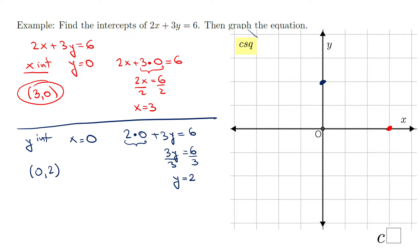The y-intercept is (0, 2), which is right here. Now we have these two points and we can sketch the graph. You don't need more than two points — these two intercepts are good enough to sketch the graph. This is the graph of 2x + 3y = 6.